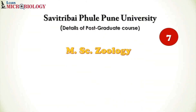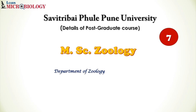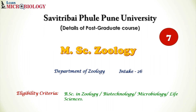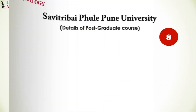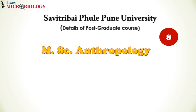Moving on to course number seven, MSc in Zoology. If you desire to study Zoology, this course is offered by the Department of Zoology with an intake capacity of 26 students. The eligibility criteria is BSc in Zoology, Biotechnology, Microbiology, or Life Science — students can opt for this course.